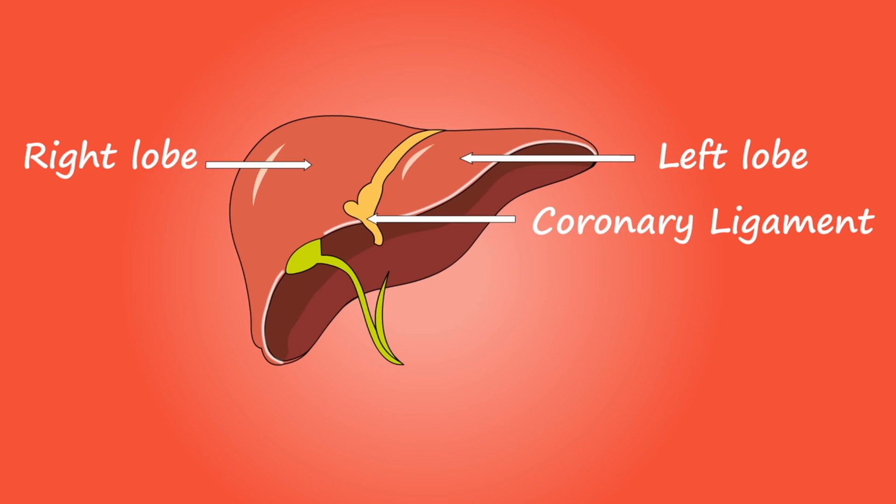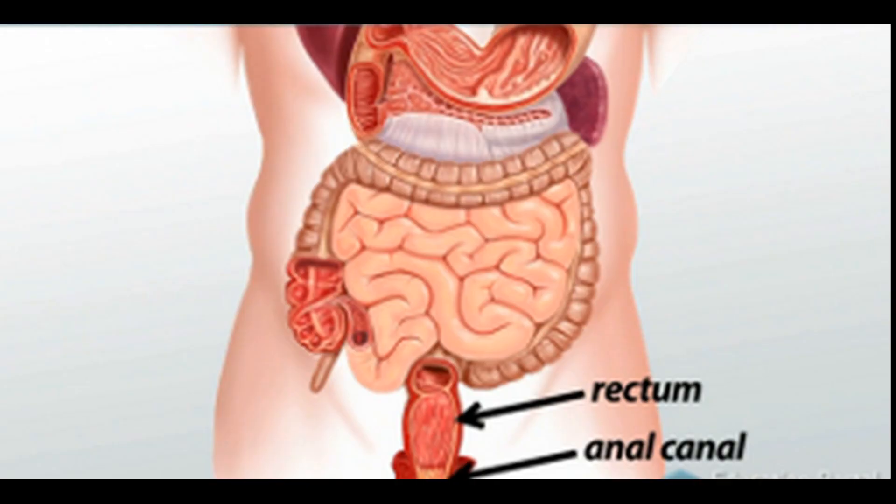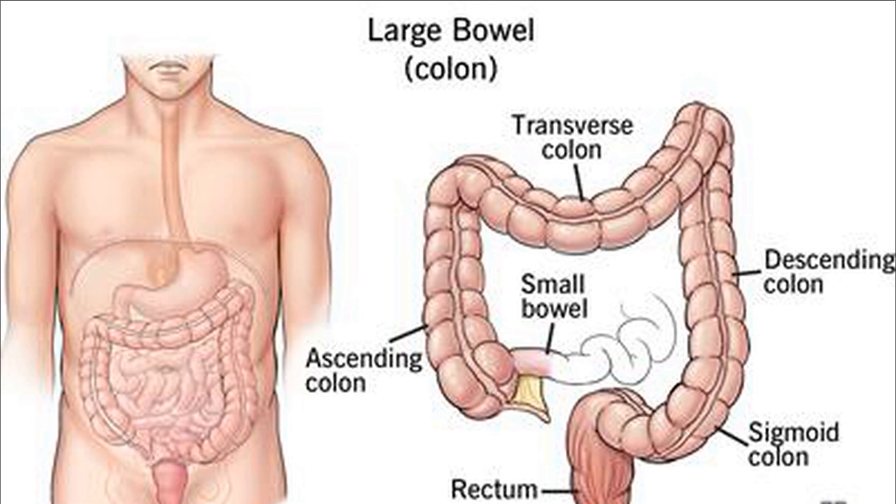Large Intestine. The small intestine continues into the large intestine. It absorbs water. The undigested solid food waste passes along this tube and is temporarily stored in the rectum. It is then removed as faeces through the anus. Food remains here for nearly 12 hours.